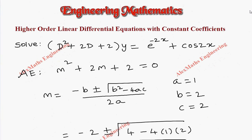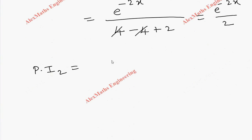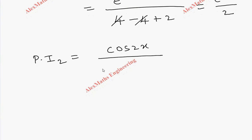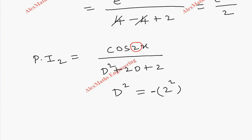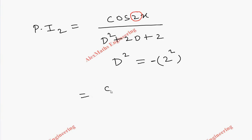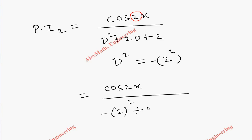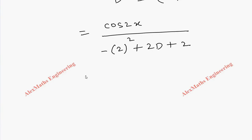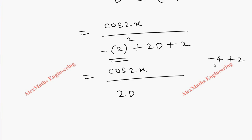Now coming to Particular Integral 2. In PI₂ we have cos2x, so we write cos2x over the denominator d² + 2d + 2. Wherever d² appears we substitute minus 2² with a minus sign outside. So the numerator is cos2x as it is, and the denominator becomes minus 4 + 2d + 2, which gives 2d minus 2. Totally it is minus 2.